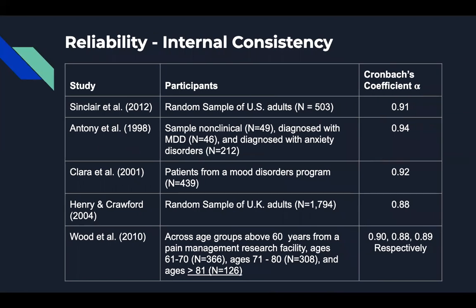To find the internal reliability of the DASS-21, we decided to compare multiple studies. These studies included clinical and non-clinical samples, and one was done on a sample from different age groups that were over the age of 60. All of these studies use a Cronbach's coefficient. A Cronbach's coefficient above 0.70 is good, 0.80 and above is better, and 0.90 is the best. As you can see across studies, there appears to be comparable and high internal consistency for the DASS-21, ranging from 0.88 to 0.94.